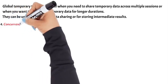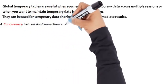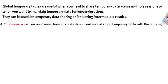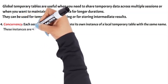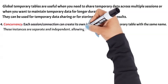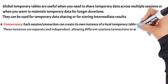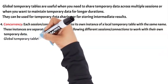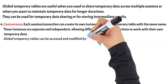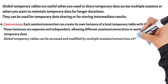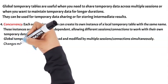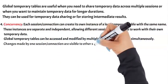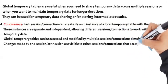4. Concurrency. Each session/connection can create its own instance of a local temporary table with the same name. These instances are separate and independent, allowing different sessions/connections to work with their own temporary data. Global temporary tables can be accessed and modified by multiple sessions/connections simultaneously. Changes made by one session/connection are visible to other sessions/connections that access the table.